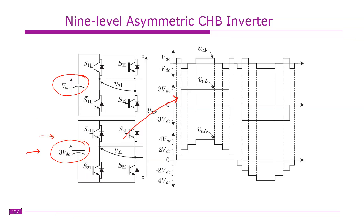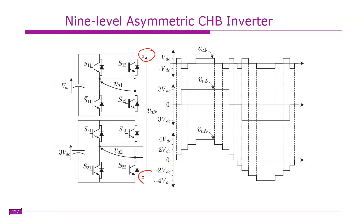The lower-rating H-bridge operates in PWM mode. The ultimate aim is to produce a desired voltage — the modulating signal — between the output terminals. A portion of this must be supplied by the lower-rating H-bridge. So the voltage that must be produced is this modulating signal for this particular inverter phase leg, and part of it must be supplied by the lower rating H-bridge.